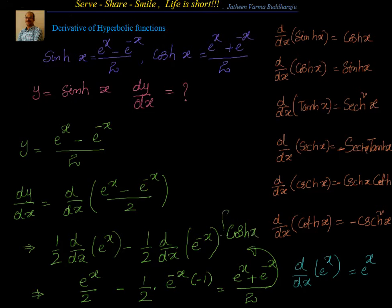Similarly, we can prove that the derivative of cosh(x) is sinh(x). We know y = cosh(x) = (e^x + e^(-x))/2. The derivative of e^x is e^x, but e^(-x) gives minus (1/2)·e^(-x). So the derivative of cosh(x) is sinh(x). I leave that to you.